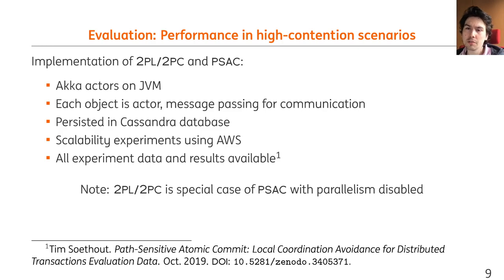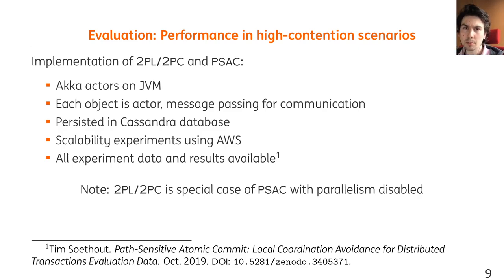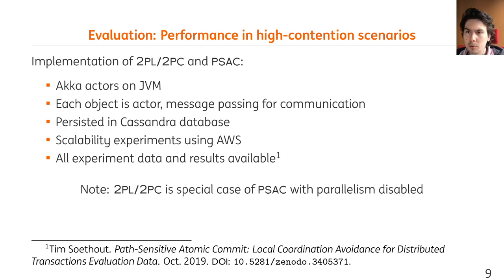In order to evaluate this algorithm and show its effect in high-contention scenarios, we implemented this idea on top of actors using the ACCA toolkit on the JVM. Each object is run as an actor and communicates via messages. The state of the object is persisted in an event log in a database, in this case Cassandra. These experiments were also run in an automated and reproducible fashion on Amazon Web Services and we also published our data and results on Zenodo. We compare two-phase locking two-phase commit against PSAC, where two-phase locking two-phase commit is a special case of PSAC where we limit the number of parallel operations for an object to one. This also means they share most of their implementation and convinces us that we are really comparing the algorithm's difference.